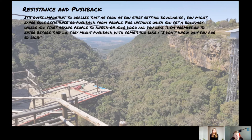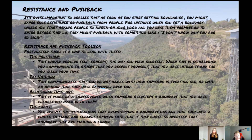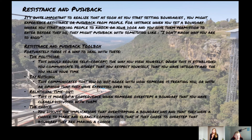Here's a list of tools you can use when you experience resistance or pushback. The first is the Politician method, which requires self-concept — the way you view yourself. When this is established, you communicate to others that you respect yourself, that you have integrity, and that you value your time. People shouldn't waste your time; they should value your time as much as you value it. You could also say nothing, which communicates that you do not agree with how somebody is treating you or with an opinion they have expressed.